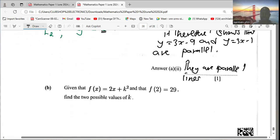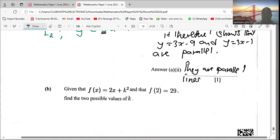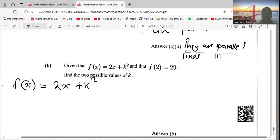Great, let's look at the next question. Given that a function f(x) = 2x + k² and that f(2) = 29, find the two possible values of k. So f(2) = 2(2) + k² = 29. What is the question? Therefore the question is: find the two possible values of k.